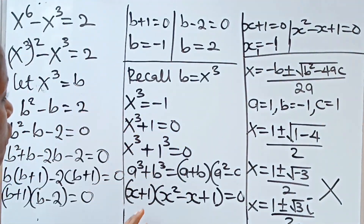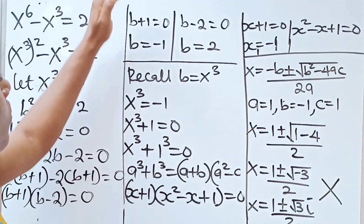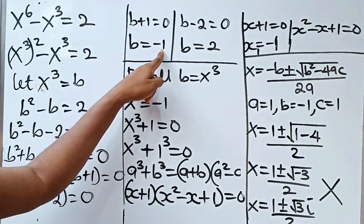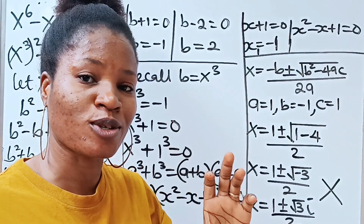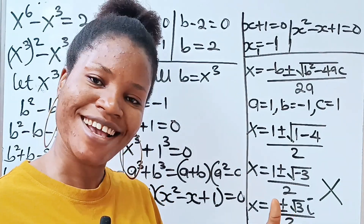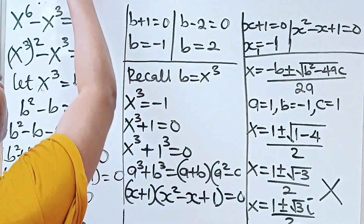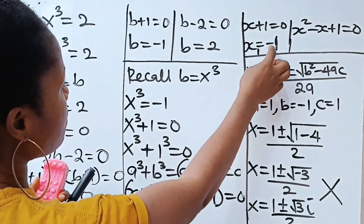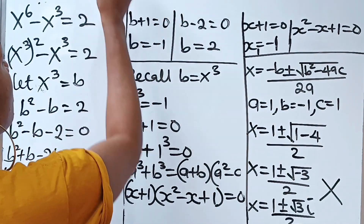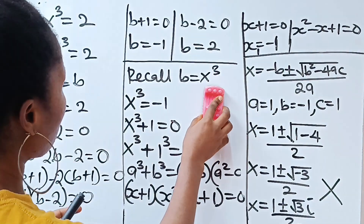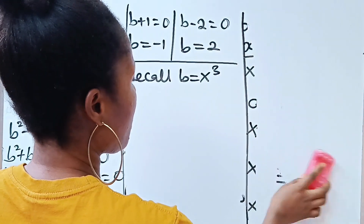We have found the first real value of x, which is minus 1. Now don't forget we also need to solve for the case where b equals 2. That is why I said to tread with caution — so you are able to get all the values of x. Let me clean this section and solve for b equals 2 to see if we get real values there as well.